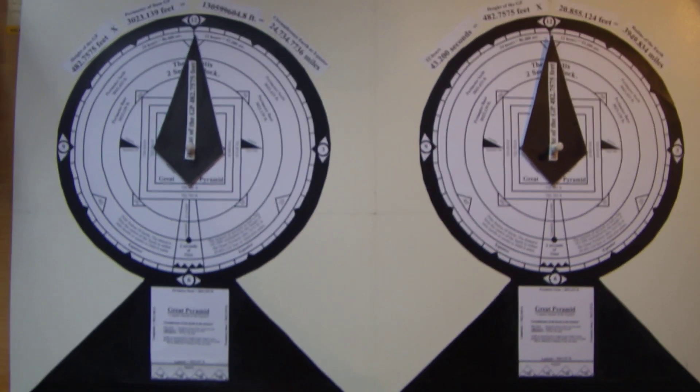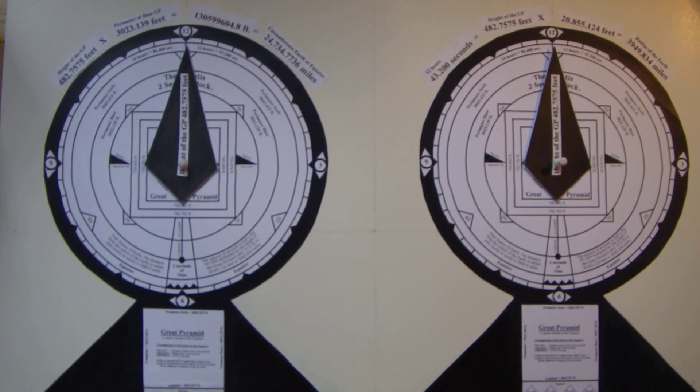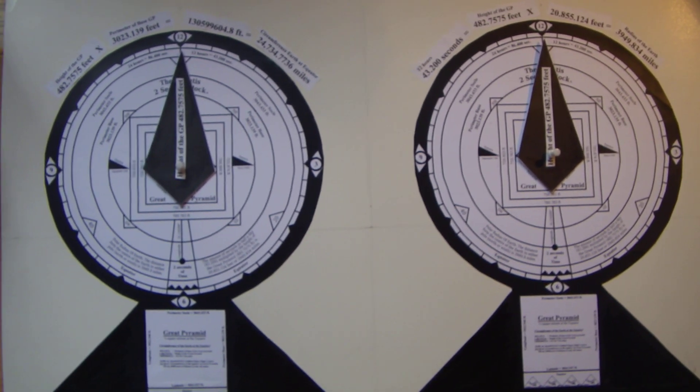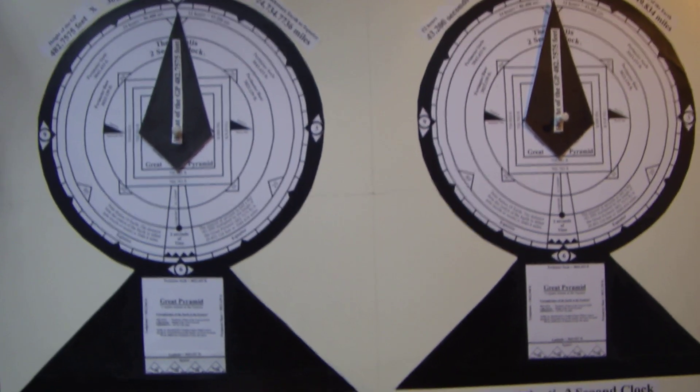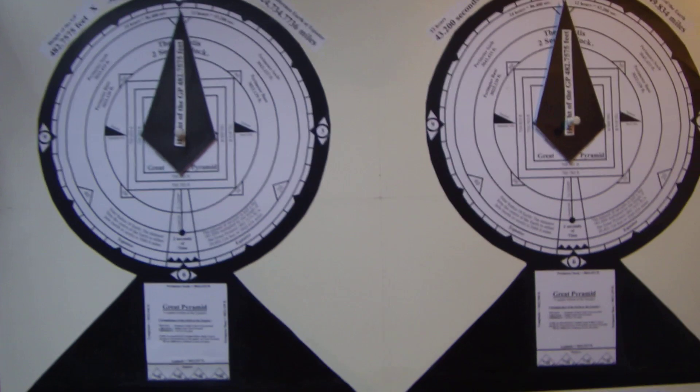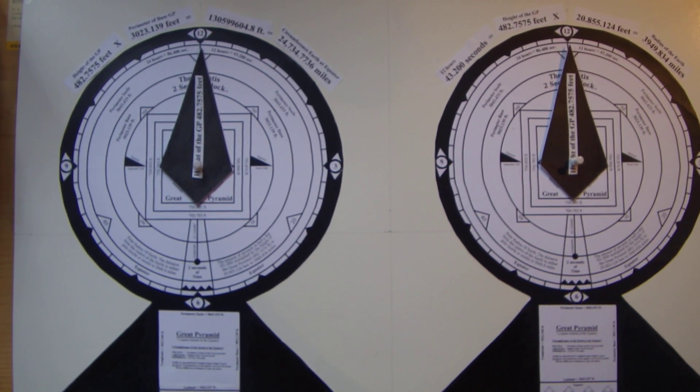This one does not have the working motor in it where the second hands are turning. This is a demonstration to explain to you two features of the Great Pyramid of Giza and how it can be determined by means of this clock: the size of the earth at the equator and the radius of the earth from either north or south pole.